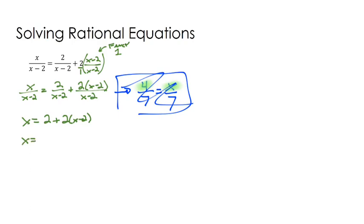So x equals 2 plus 2x minus 4. I can combine some like terms right there. I can subtract 2x from each side. I got that by doing this. And then I can divide by negative 1 on each side and get that x equals 2.